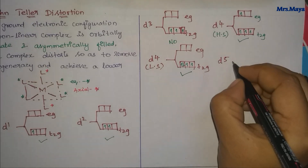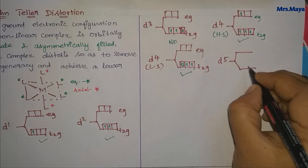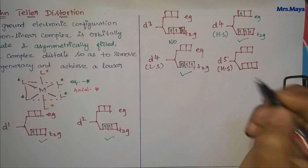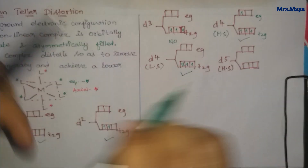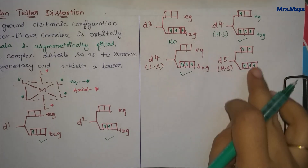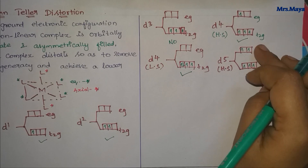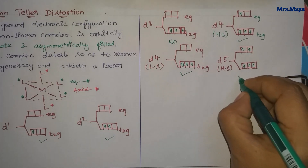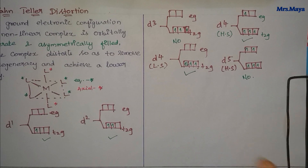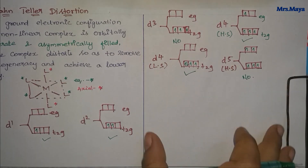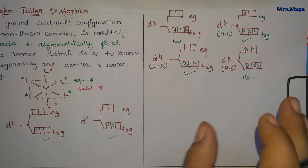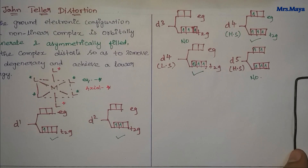Now the D5 system. The D5 system has high-spin and low-spin. If you look at the high-spin case, there are 5 electrons: 1, 2, 3, 4, 5. Now it is symmetric — there are 3 orbitals in T2G and 2 orbitals in EG, each singly filled. So if you look at the high-spin case, there is no distortion.